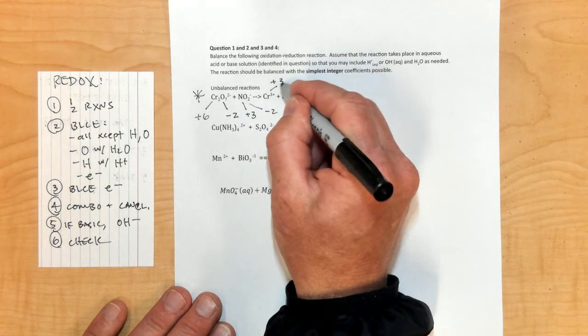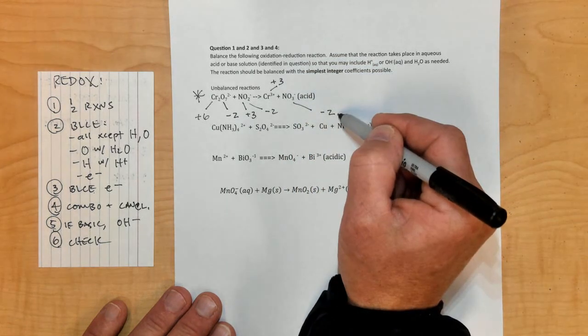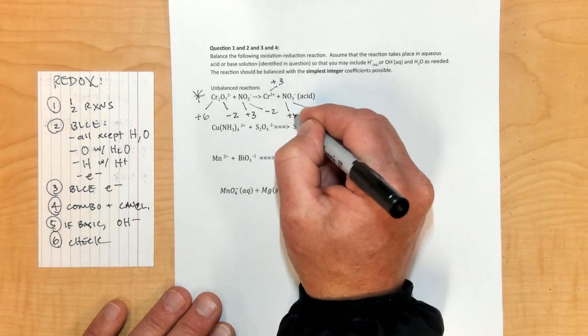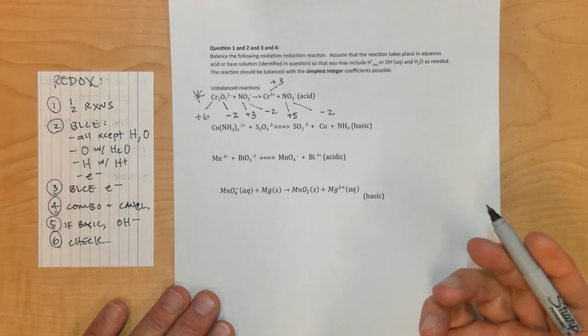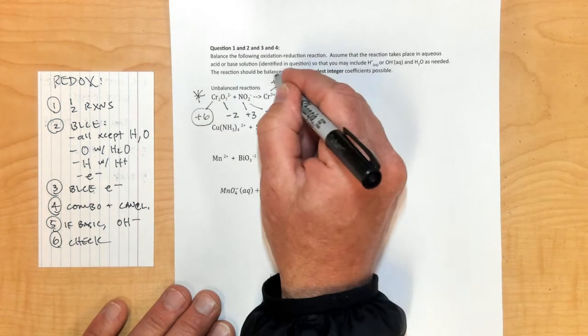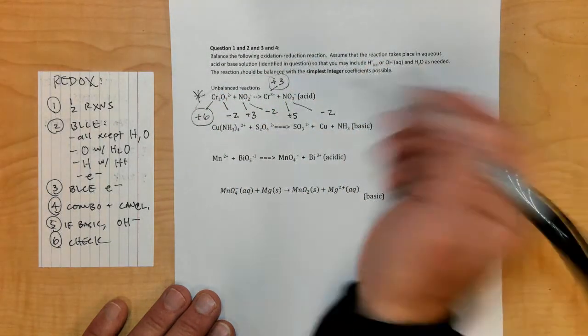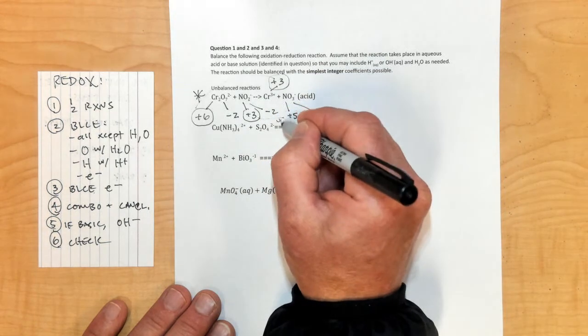Oxygen is negative 2, which gives me negative 4 for the oxygen. It's got to add up to negative 1, so nitrogen here would be positive 3. On this side, the chromium is positive 3. The oxygen is negative 2, times 3, so that's negative 6, which means nitrogen must be positive 5. Chromium goes from 6 to 3, so it's reduced. Nitrogen goes from 3 to 5, so it's oxidized.